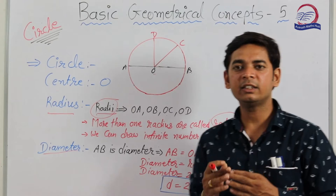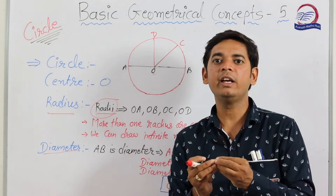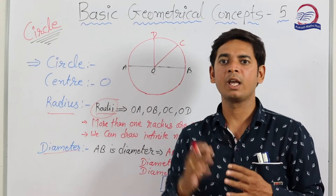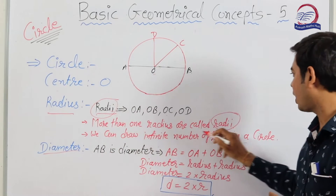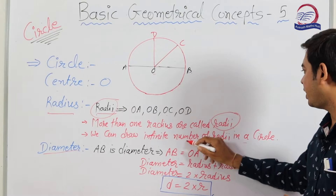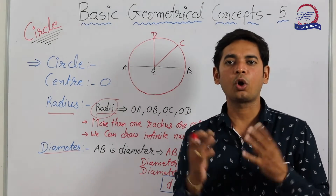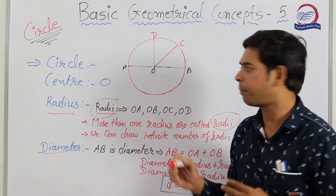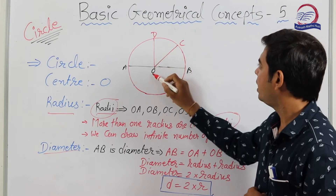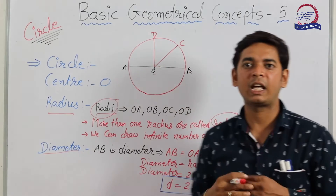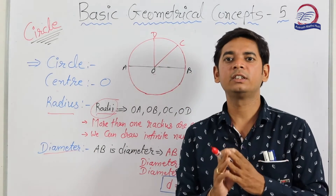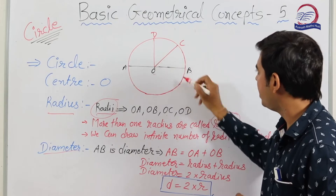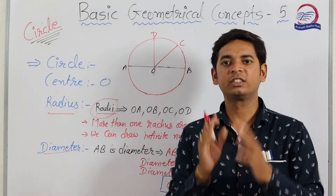Why do we write 'radii'? Because 'radius' is a singular word — it refers to just one radius. If we talk about more than one radius, we say 'radii'. More than one radius are called radii. We can draw an infinitely large number of radii in a circle. In this figure I have drawn four: OB, OC, OD, and OA — but many more can be drawn. Also, all radii of any given circle have the same measurement.